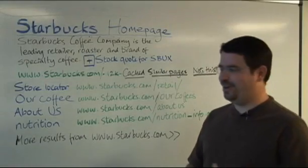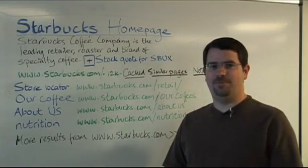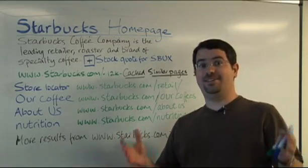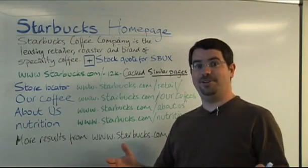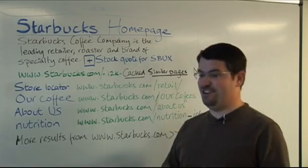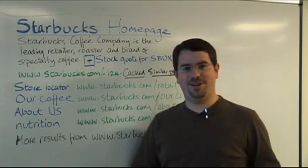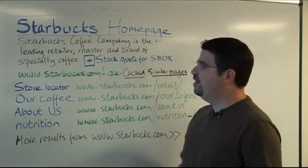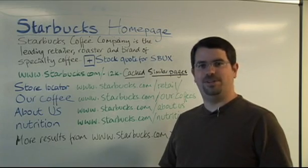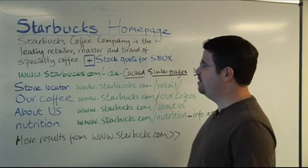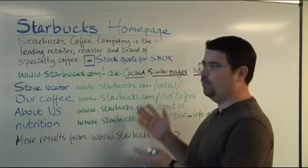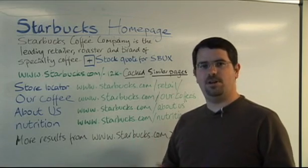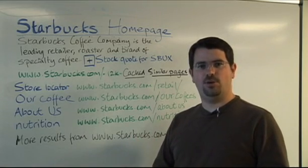Just to remind everybody, I'm visiting the Kirkland office and they said, let's grab a video camera and just talk about a few things and have a little bit of fun and put these videos up on the web. So one of the things that we thought we'd talk about is a snippet — what are the different parts of a snippet and how do we choose which parts to show?